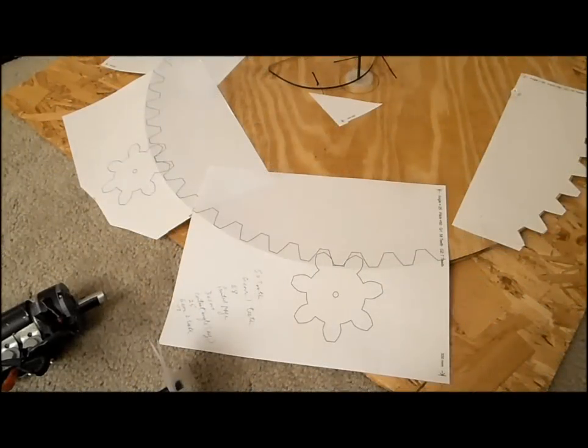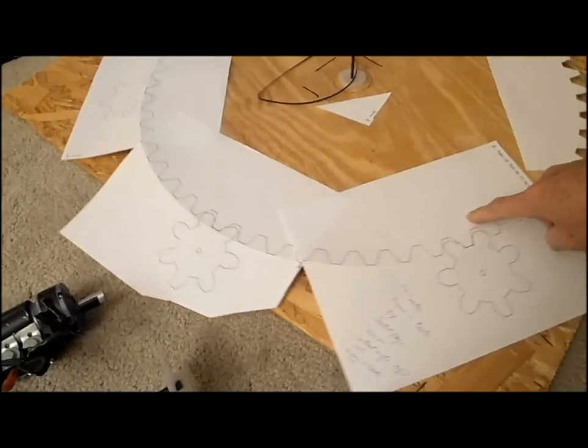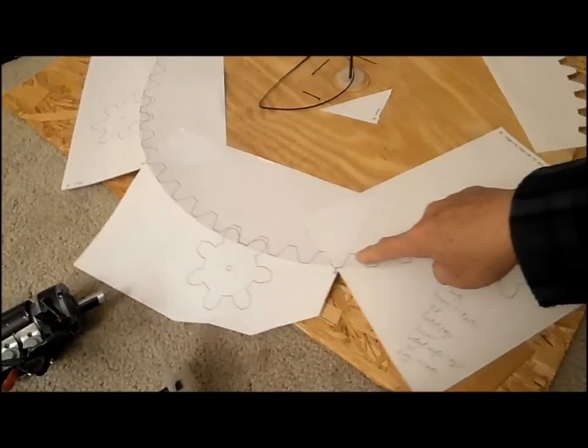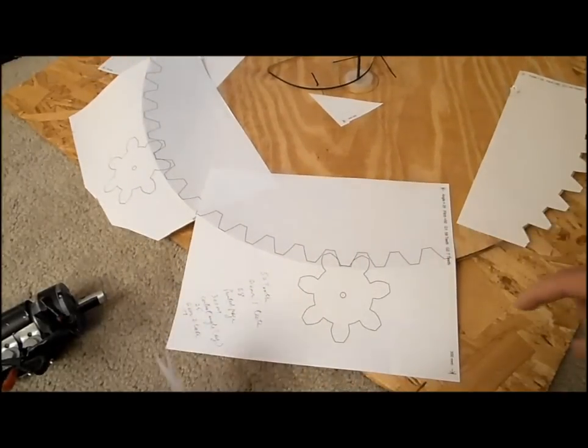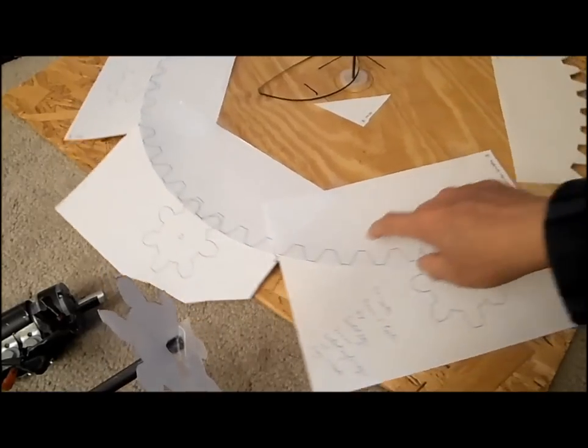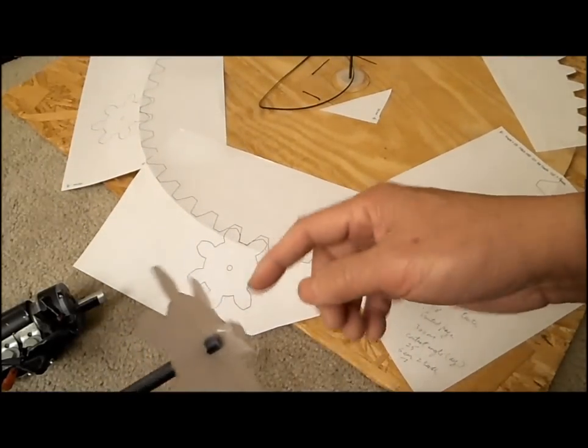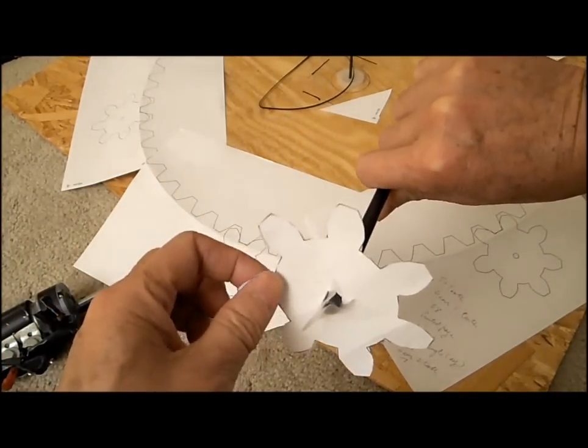For my solar tracker solar oven turntable, I have decided on cutting some wood gears to turn the turntable. This is a template I downloaded and the gears would be something like this, the small gear.